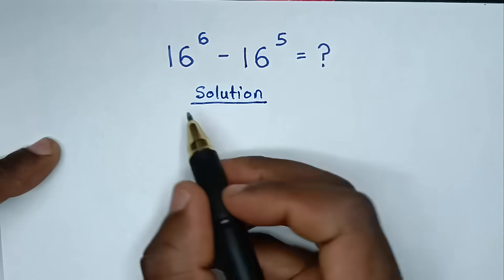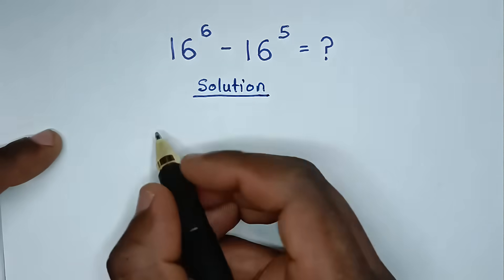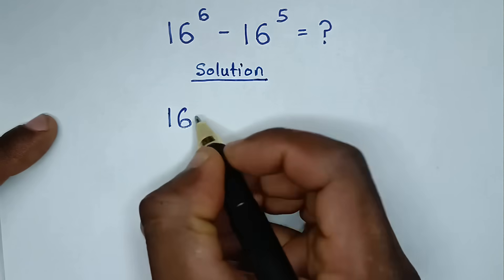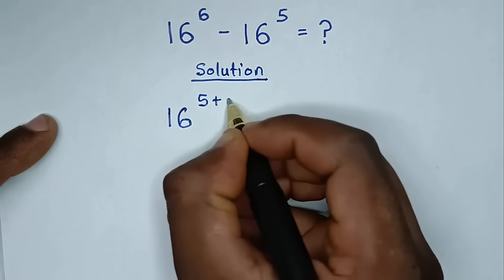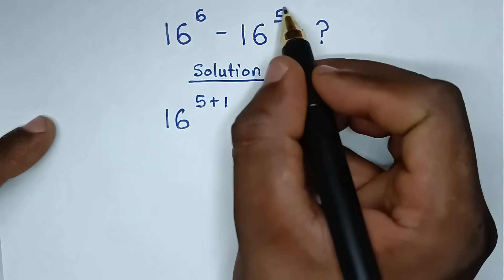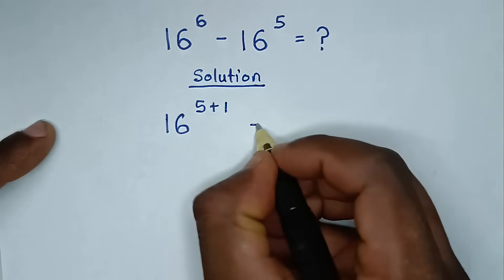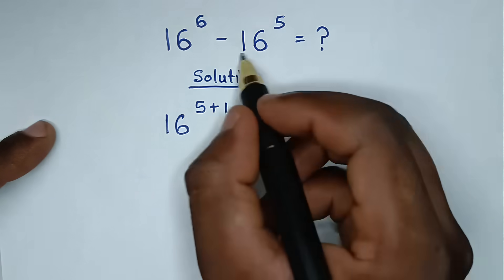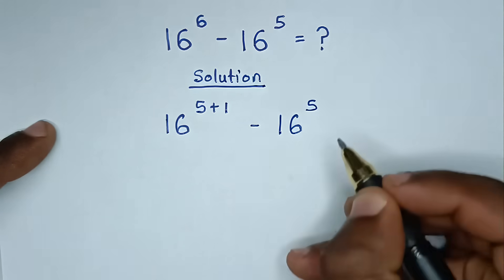Into this problem, 16 power of 6 is the same as 16 power of 5 plus 1, because here we have 16 power of 5. Then it will be minus 16 power of 5.